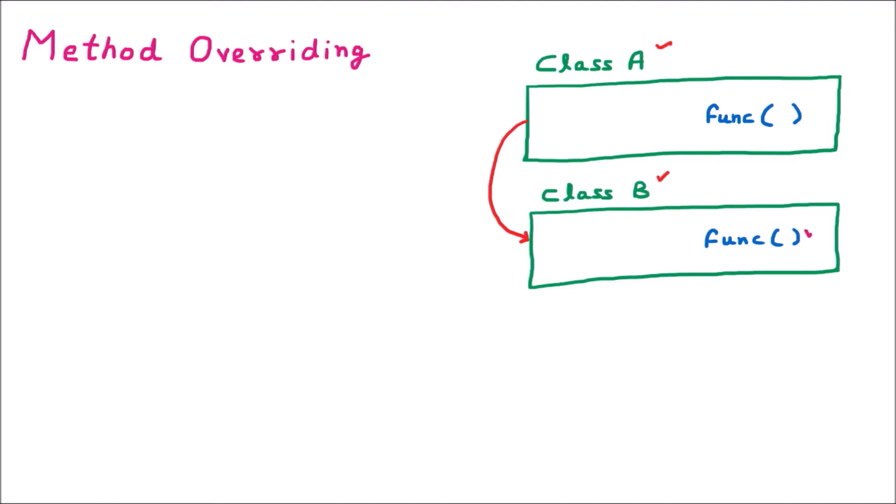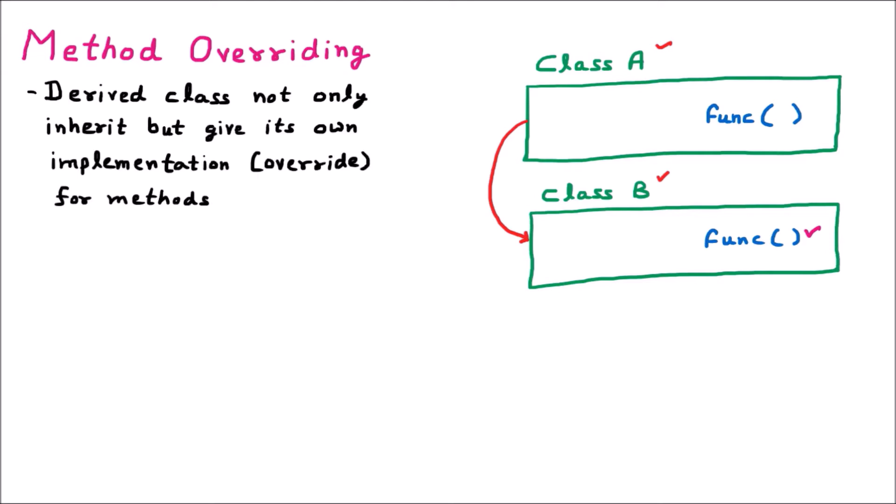Here the derived class method can re-implement - re-implement means it provides its own definition to the function. So the derived class not only inherits but it can give its own implementation for the methods. The implementation of class A's method and class B's method can have different implementations. So that is the benefit of overriding.